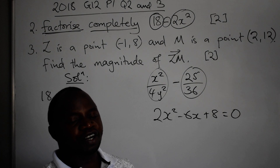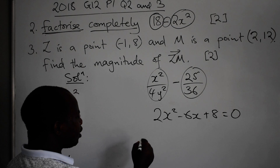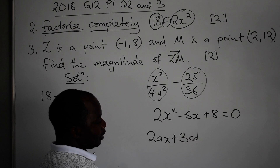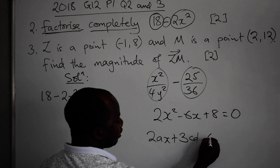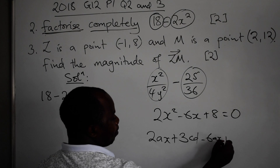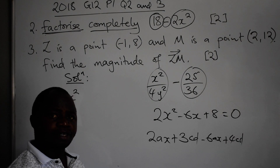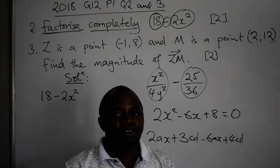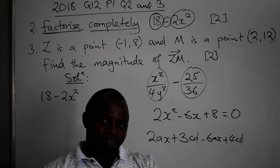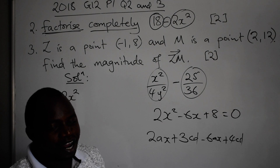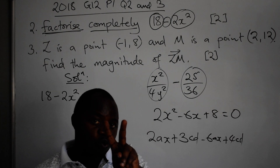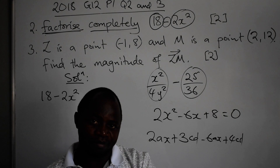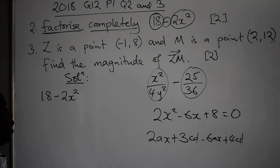We also have a type of factorization that will have four terms — for example 2ax plus 3d minus 6ax plus 4cd. This one has four terms, and that is factorization by grouping. So to summarize: difference of two squares — two terms, separated by minus. Quadratic — three terms. Grouping — four terms. Now let's look at the question we have been given: 18 minus 2x squared.